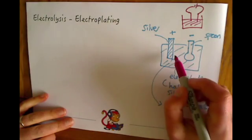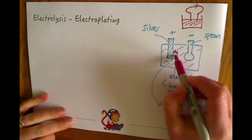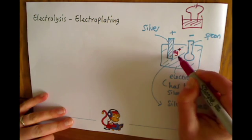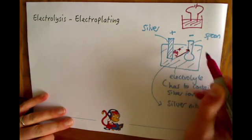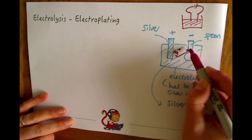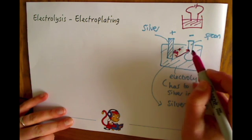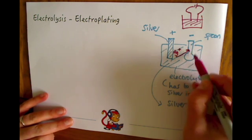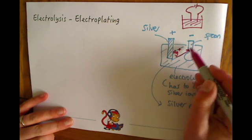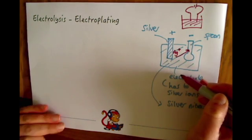So what will happen is you'll get the positive silver ions moving from the positive electrode and from the solution to coat the spoon here. And at the negative electrode it will gain electrons so you'll have reduction happening and it will turn into silver atoms which will then coat the spoon and this will then be covered in silver.